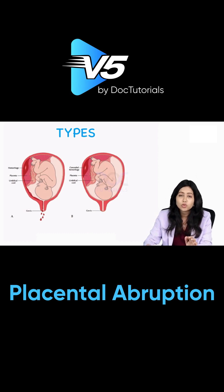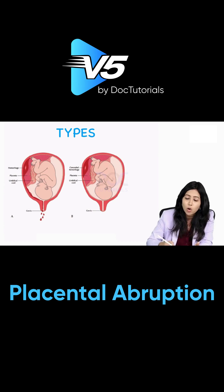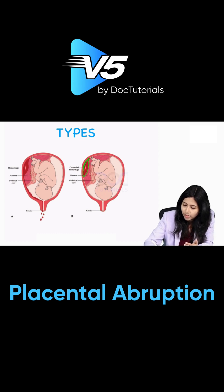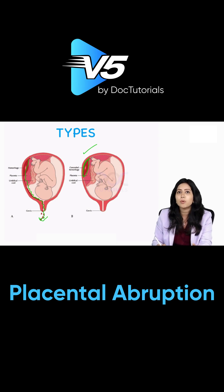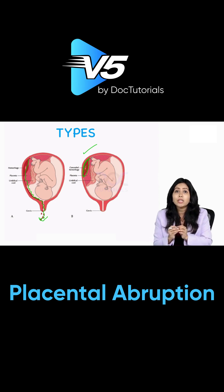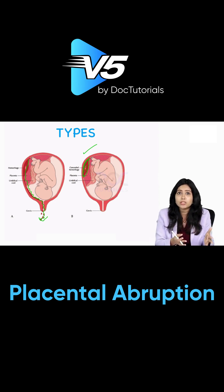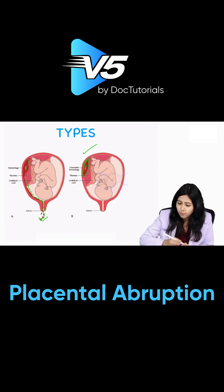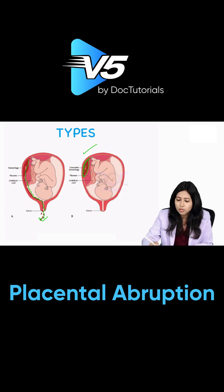Now let us see the types of abruption. The types can be either concealed or revealed. Either the blood can collect behind the placenta itself — this is known as the concealed type — or it can bleed out, which is the revealed type. In the concealed type, blood is collecting but it is not visible outside, so sometimes it can be missed. Apart from this, the thromboplastin that collects here can be released into systemic circulation, making this the most dangerous type of abruption. So concealed is more dangerous.